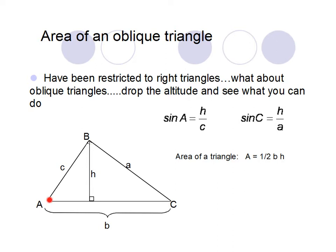Let's look at one scenario — the triangle on the left. The sine of angle A equals opposite over hypotenuse, which gives us h over c. Now looking at the right triangle on the right side, the sine of angle C equals opposite over hypotenuse, giving us h over a. Doing a little algebra: multiplying both sides by c gives c times sine of angle A equals h. Multiplying both sides by a gives a times sine of angle C equals h. Since both equal h, they must equal each other.